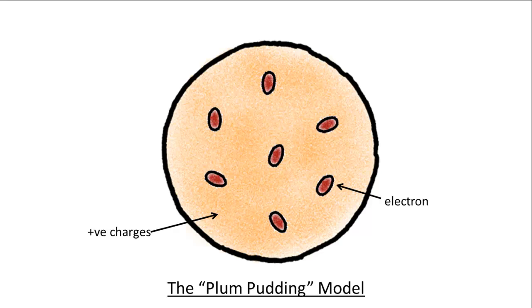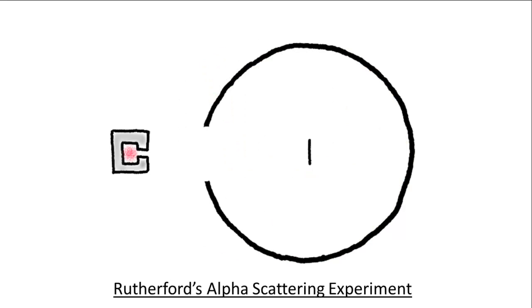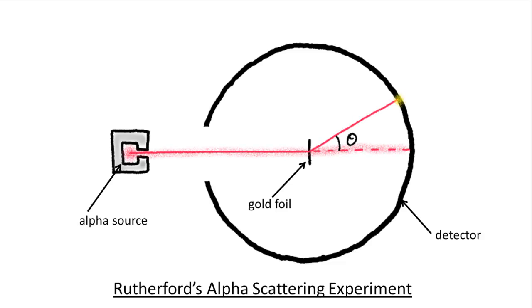Then comes Rutherford's experiment. In Rutherford's experiment, alpha particles were directed head-on into a thin gold foil. A detector is used to count the number of alpha particles at each angle of deflection theta.